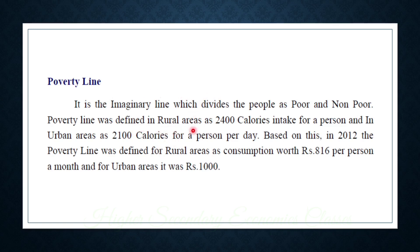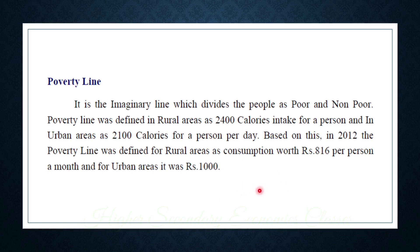There are higher calories required in rural areas compared to urban areas. In rural areas, consumption is Rs. 816 per person per year; it is fixed as the poverty line. In urban areas, it is higher than that.